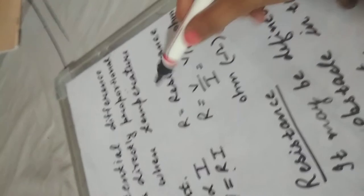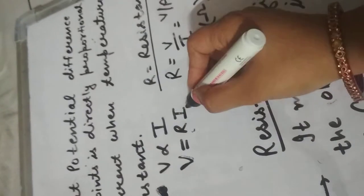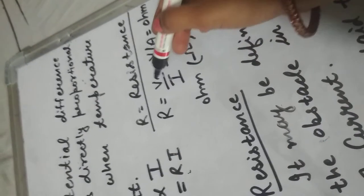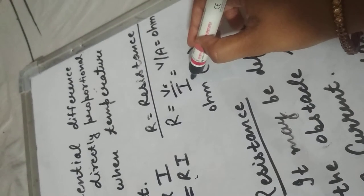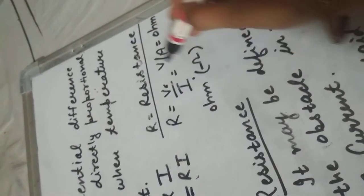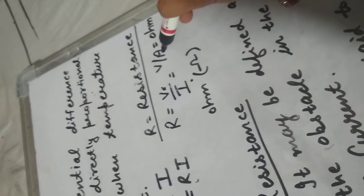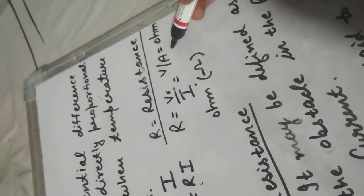Here R is the resistance. R is the resistance. अगर हम यहां से R की value को find out करें, R will come out V upon I. Where V is the potential difference and I is the current. And the unit of potential difference is Volt and unit of current is Ampere. So, it will become volt per ampere.